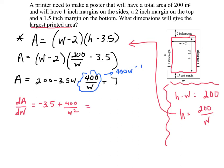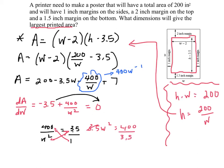We set this equal to 0. Easiest way to begin is just by moving things over. So we could be solving 400 over w squared equals 3.5. We could just have 3.5w squared equals 400. Divide both sides by 3.5.